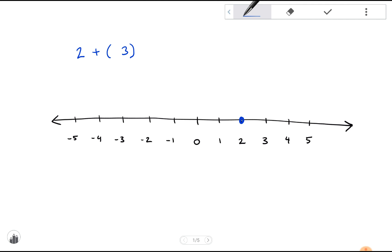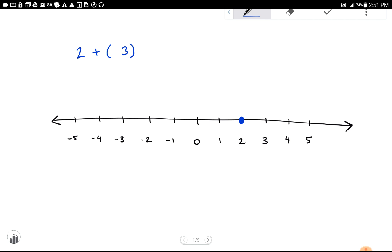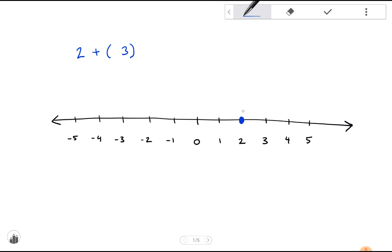So we start with two, solid dot at two. We're going to add three, and when we add positive three, we move to the right. So we move to the right three positions: one, two, three. We end up here at number five. So two plus three is five, which we probably could have done before without a number line, but we're using it to illustrate a few points.